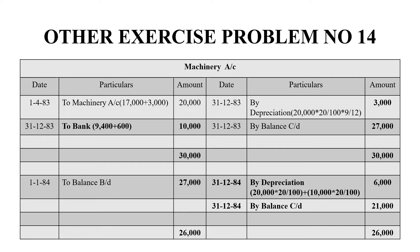Because of limited space here, I am abbreviating. But if you have a wide answer sheet, you can do it in landscape format in the same way. So: rupees 17,000 plus rupees 3,000 is 20,000 rupees. In the first year, we need to calculate the depreciation for that machinery for 9 months — April to December is 9 months — so we get 3,000 rupees depreciation.